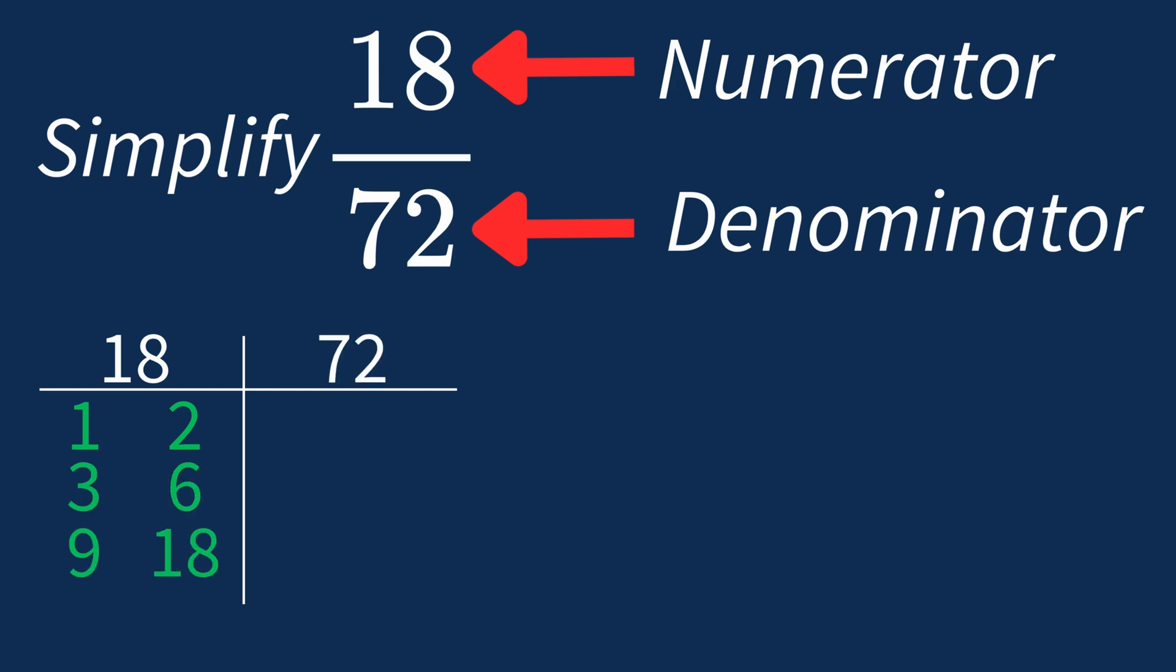For 72, the factors are 1, 2, 3, 4, 6, 8, 9, 12, 18, 24, 36, and 72. So the largest common factor between 18 and 72 is 18.